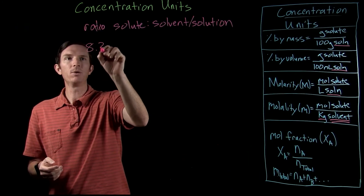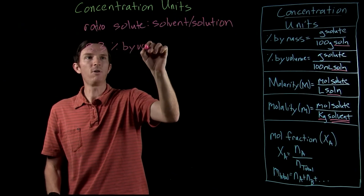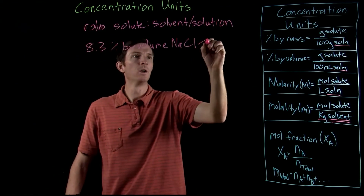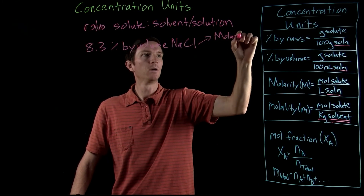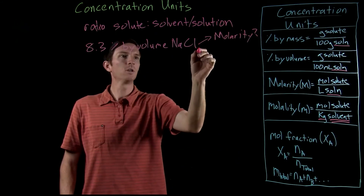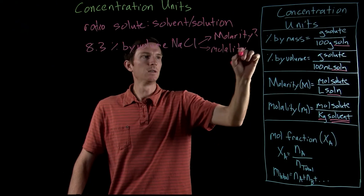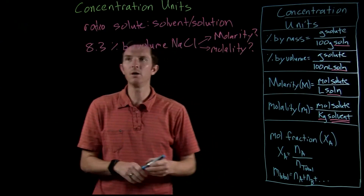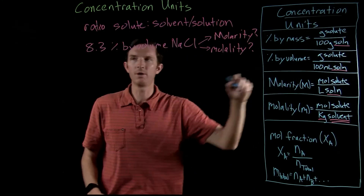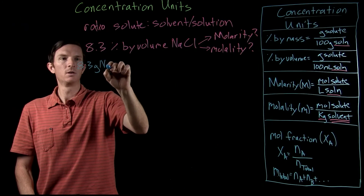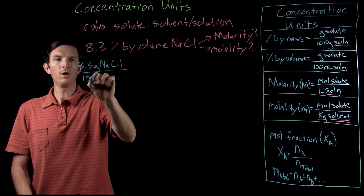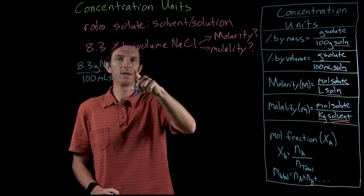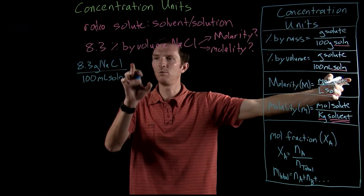Say we have an 8.3 percent by volume sodium chloride solution. We want to figure out both the molarity and the molality of the solution. To convert to molarity, we rewrite this as 8.3 grams of NaCl per 100 milliliters of solution, and we want to get to units of moles of solute per liters of solution.